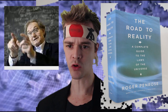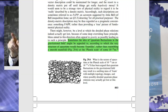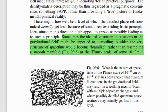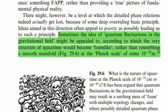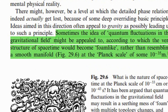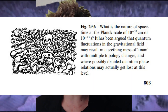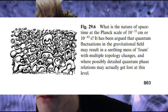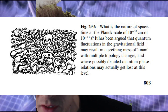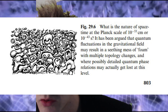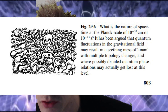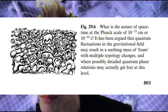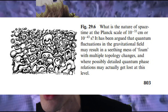Roger Penrose, in his book Road to Reality, describes quantum foam as: sometimes the idea of quantum fluctuations in the gravitational field might be appealed to, according to which the very structure of spacetime would become foam-like rather than resembling a smooth manifold. Here's an artist's depiction — it basically asks: what is the nature of spacetime at the Planck scale of 10 to the negative 33 centimeters, or 10 to the negative 43 seconds, the time of the early universe? It has been argued that quantum fluctuations in the gravitational field may result in a seething mess of foam with multiple topology changes, where possibly detailed quantum phase relations may actually get lost at this level.